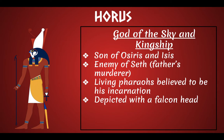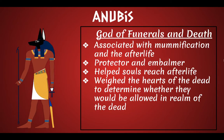Horus is the god of the sky and of kingship. He's the son of Osiris and Isis, and the enemy of Seth — him and Seth are in constant battle. Whenever they're fighting, it means something bad is happening in the world. The living pharaohs are believed to be his incarnation, and he's often depicted with a falcon head. Anubis is the son of Seth and Nephthys, and he's associated with mummification and the afterlife. He's a protector and an embalmer, and it's his job to help souls reach the afterlife. He weighs the hearts of the dead to determine whether they would be allowed into the realm of the dead — if your heart weighs too much with sin, you don't get to go in.